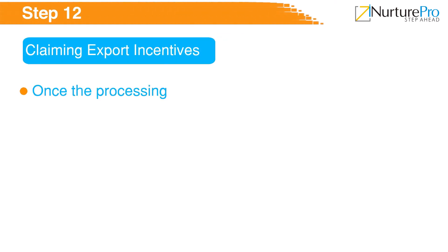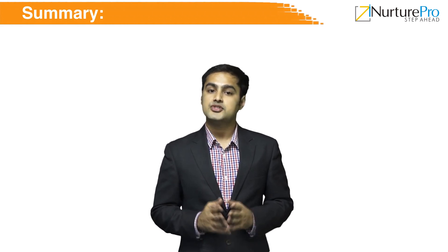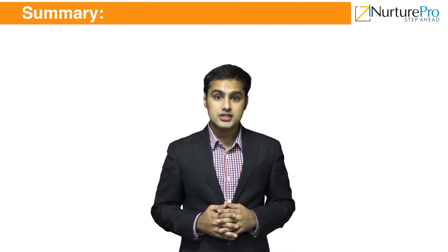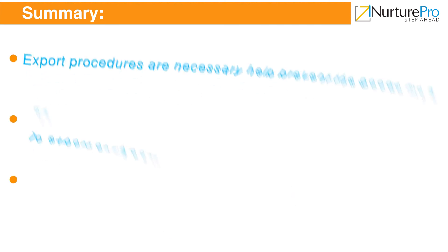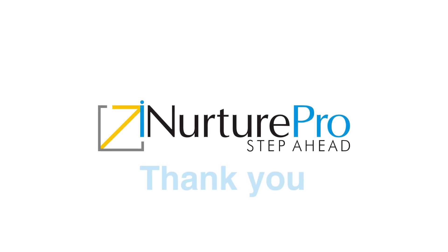On receipt of these documents, the exporter applies to the Chamber of Commerce to obtain a Certificate of Origin. The Generalized Scheme of Preferences (GSP) allows developing countries to pay less or no duties on their exports to the European Union. In case exports are made to countries providing GSP concession, the exporter needs to obtain a GSP Certificate of Origin from the concerned authority.